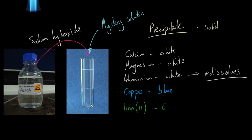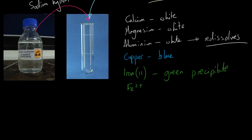Copper forms a blue precipitate - little specks of a blue solid. Iron(II) forms a green precipitate, which tells you the iron is present as Fe²⁺ ions. But there is another sort of iron: iron(III), essentially Fe³⁺, which makes a brown precipitate. So you have these characteristic colors to help you identify the metal cation.